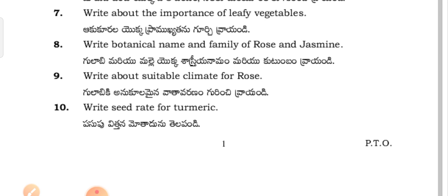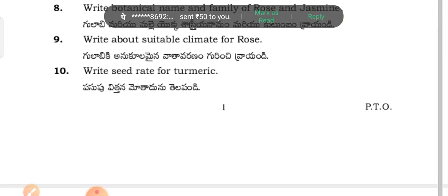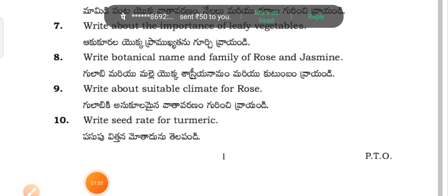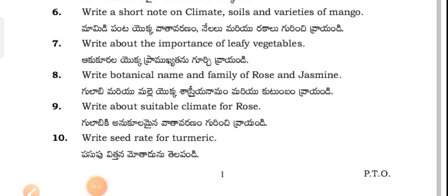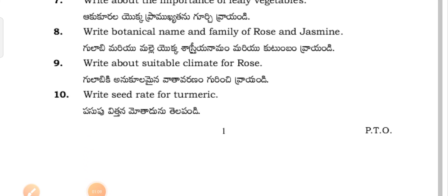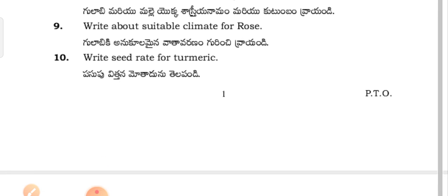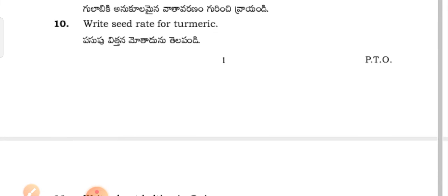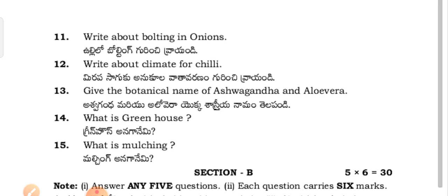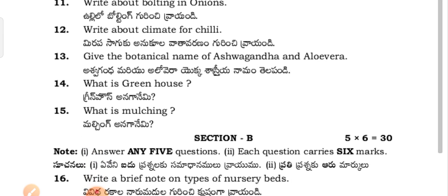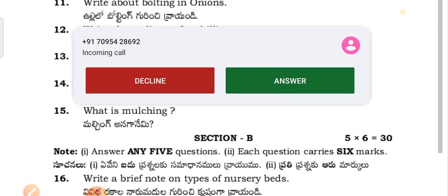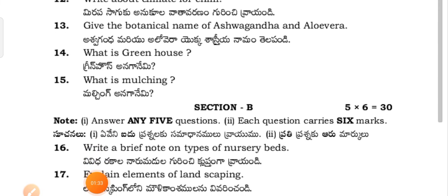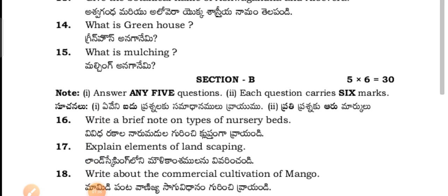Write about the importance of leafy vegetables. Write the botanical name and family of rose and jasmine. Write about suitable climate for rose and write the seed rate for turmeric.